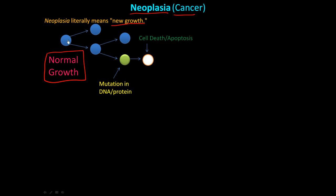One cell divides into two, and then these two cells divide into four. Let's say this is a skin cell and you are out in the sun for a long time, and UV light from the sun causes a mutation in the DNA or a protein or something. So this cell has a problem now. But there are repair mechanisms — enzymes that fix the problem.